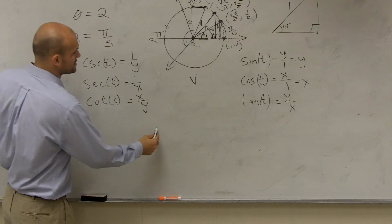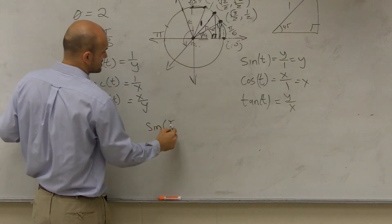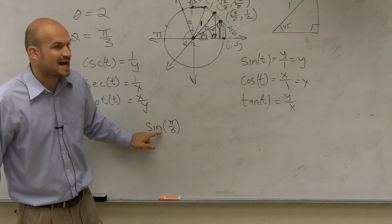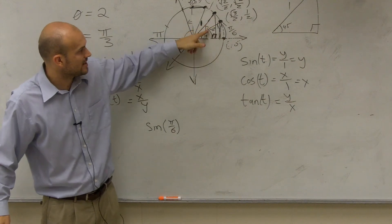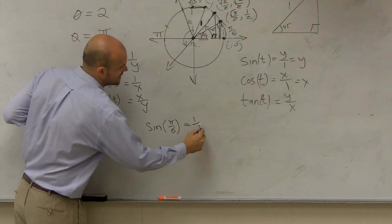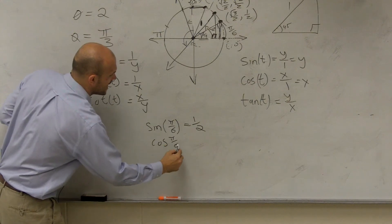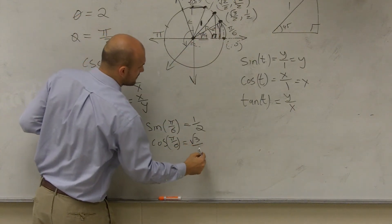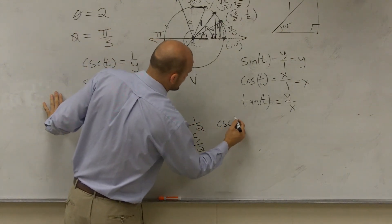Let me just go through one real quick. Let's say I said find the sine of pi over 6. The sine represents the y coordinate of pi over 6. Pi over 6 is this angle right here. The y coordinate is one half. Therefore, the sine of pi over 6 is equal to one half. So therefore the cosine of pi over 6 is equal to the x coordinate, which is square root of three over two.